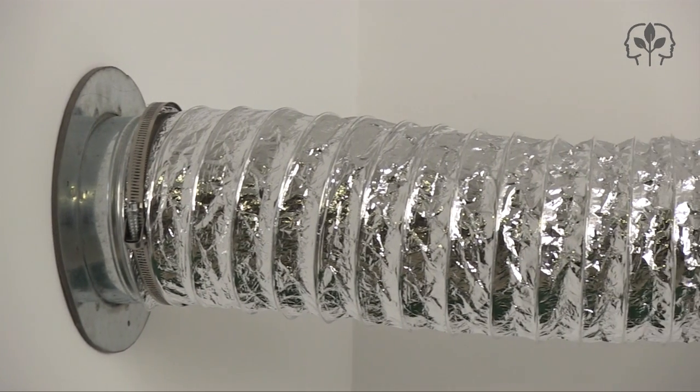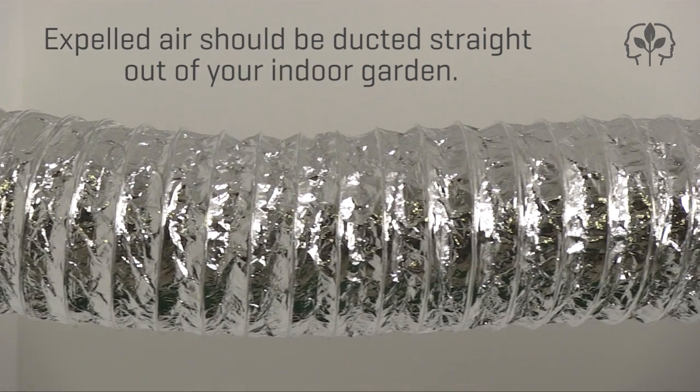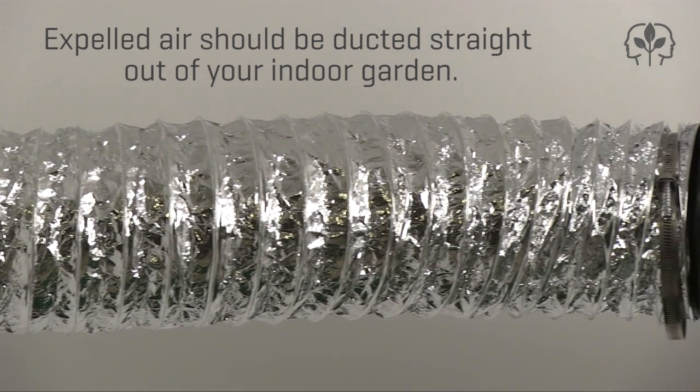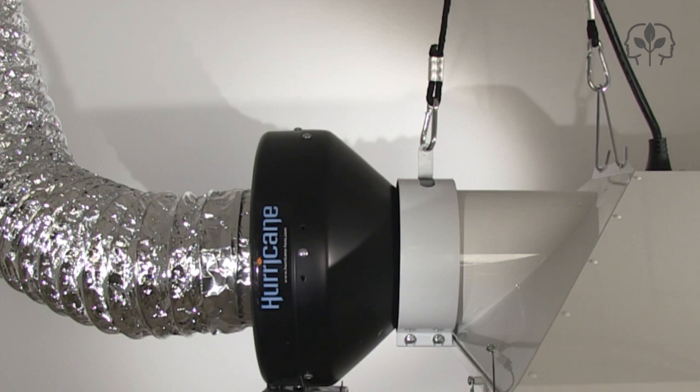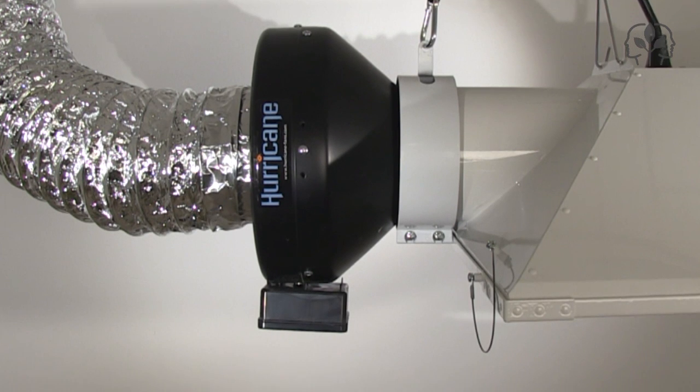Use a flange, ducting, and jubilee clips to create an airtight seal. While it's important to have your ducting as straight as possible, remember to give yourself enough slack so that you can move your grow lights up and down.